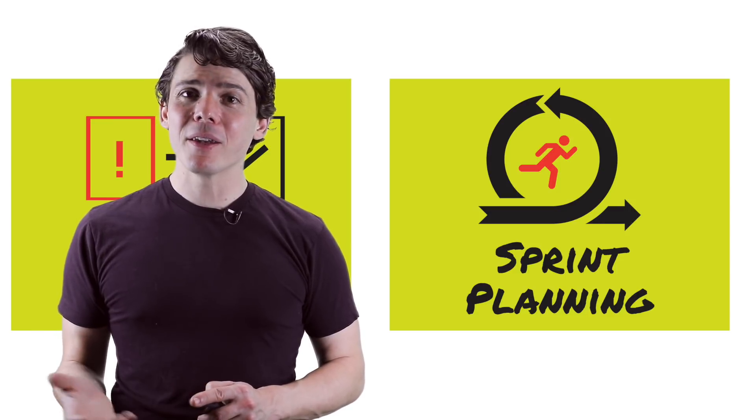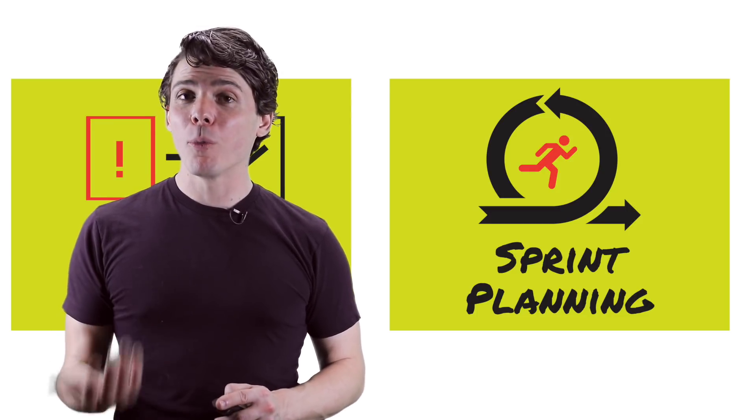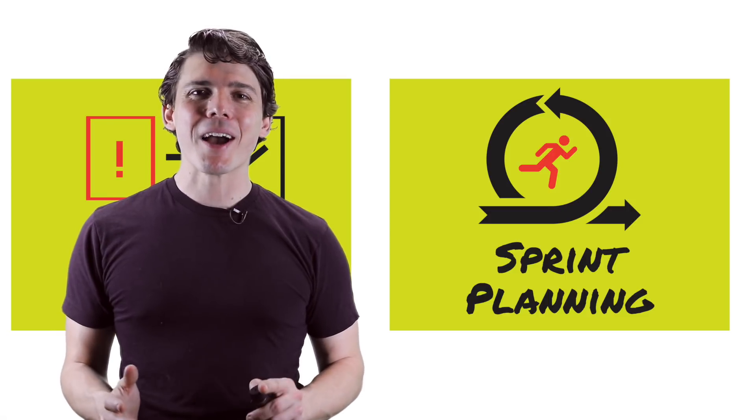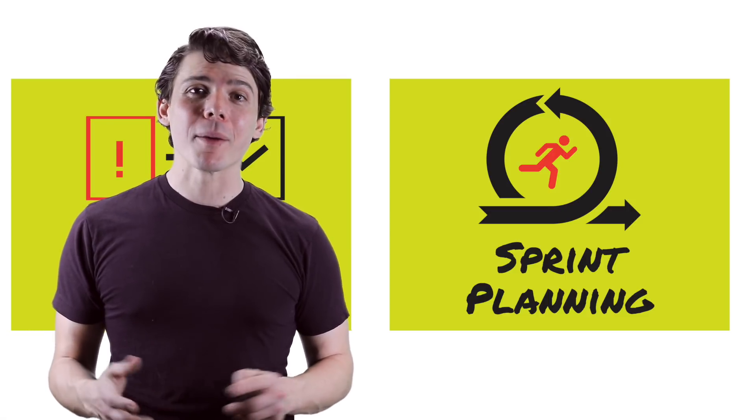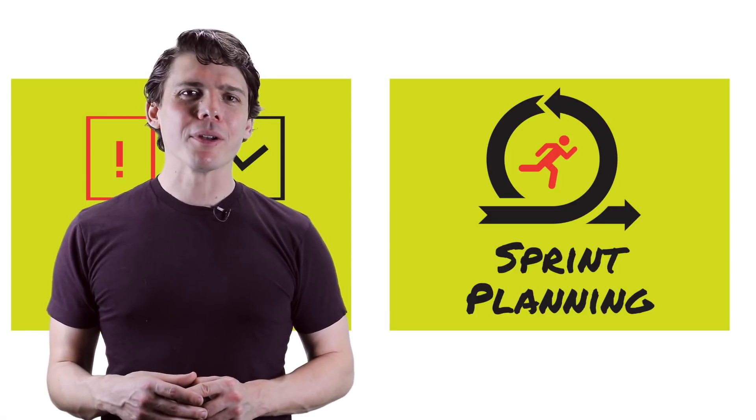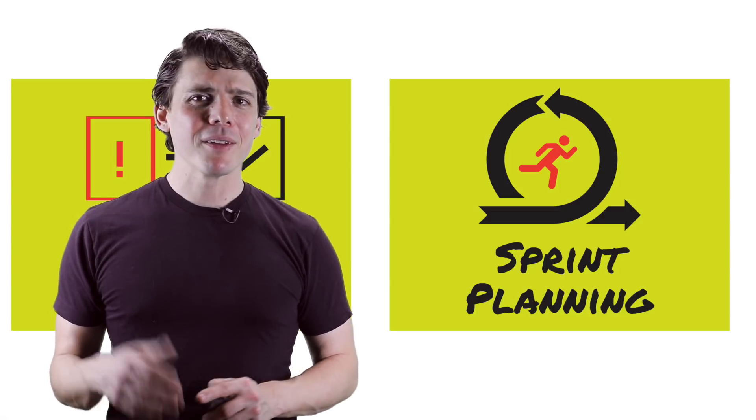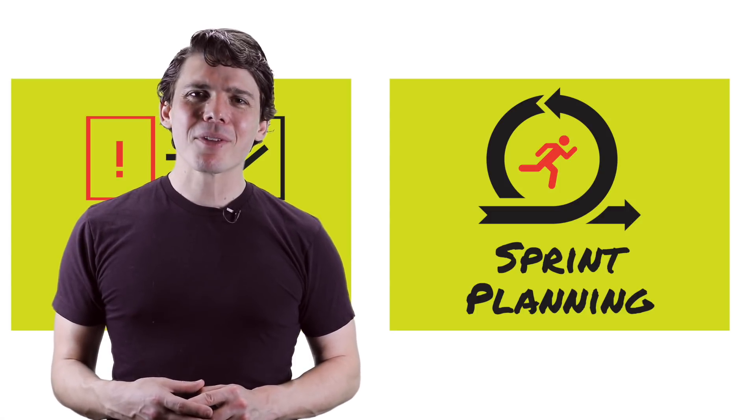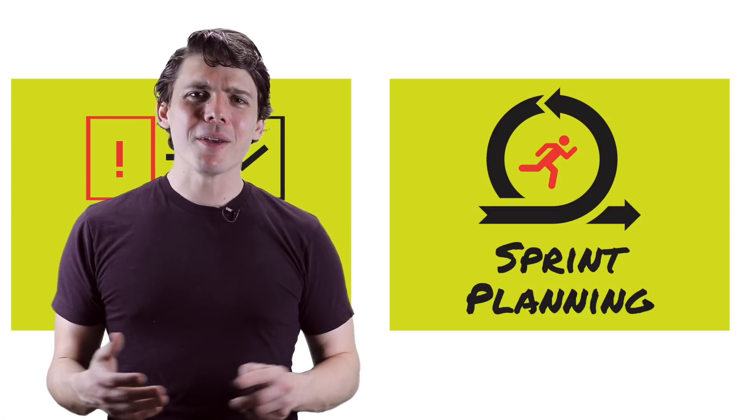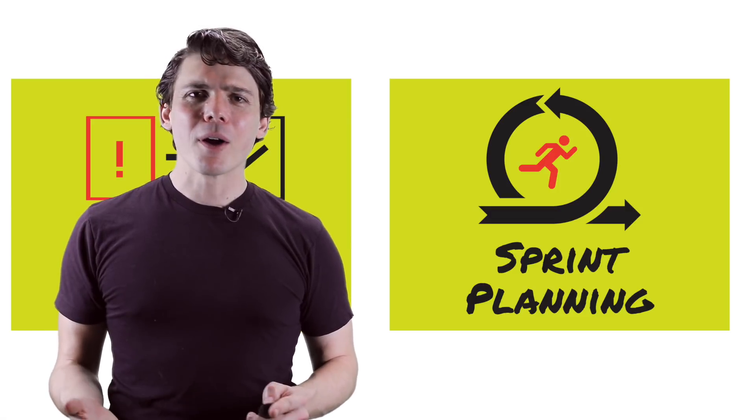The sprint itself begins with sprint planning. The purpose of sprint planning is to: A, determine what can be most likely delivered in the next sprint, and B, come up with a high-level plan for how that work will be accomplished. Only the development team can decide what it can accomplish over the upcoming sprint. They will do this by considering the work completed and left incomplete from the prior sprint, the team's capacity this sprint, and the team's historical performance.